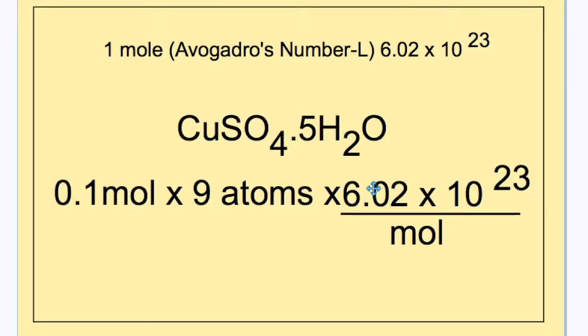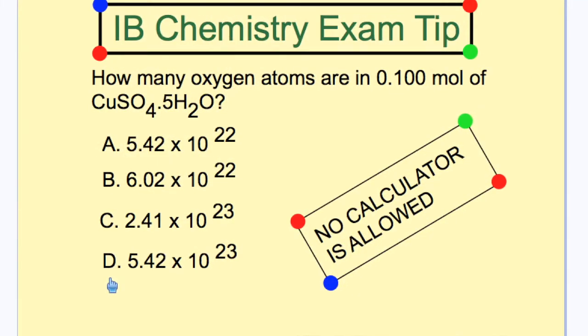Which means the answer should then be 5.4 by 10 to the power of 23 atoms of oxygen. And here we can see that that corresponds to the choice of D.